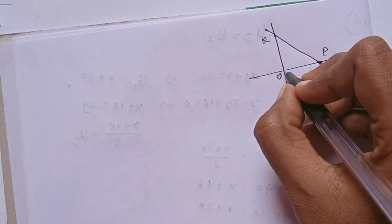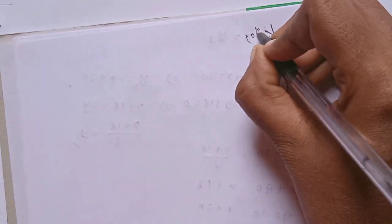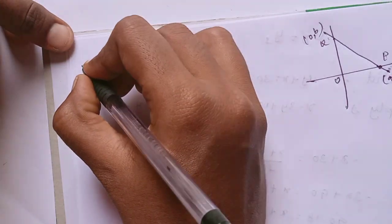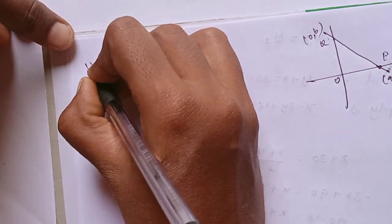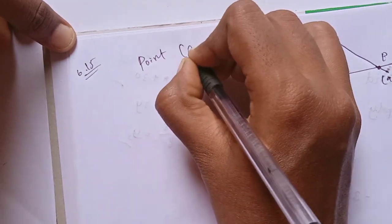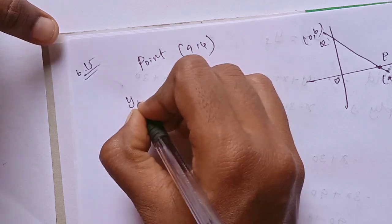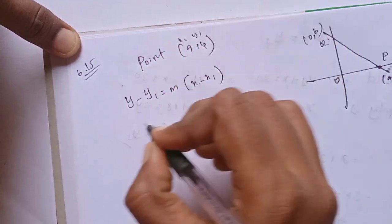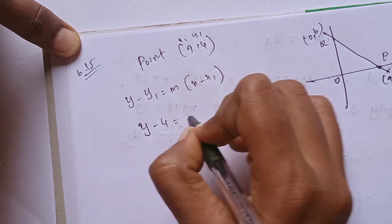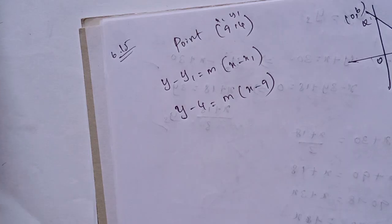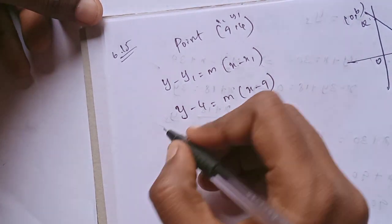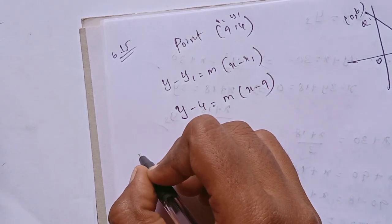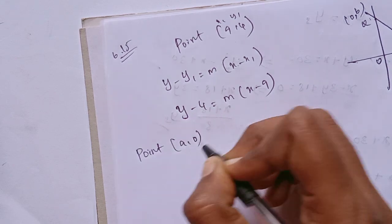The point is (a,0) and (0,b). I'm going to use the slope form. The point is (9,4), so the equation is y - y1 = m(x - x1).